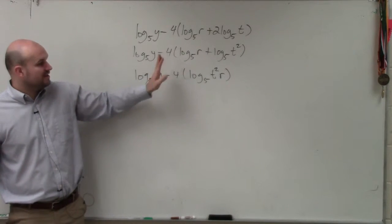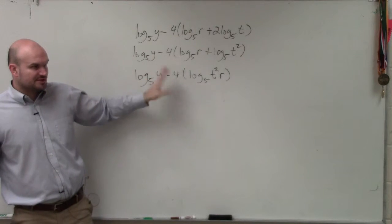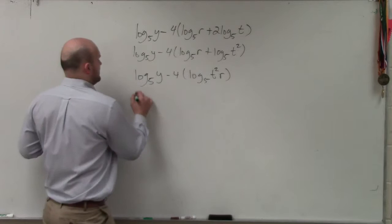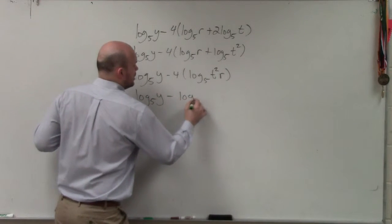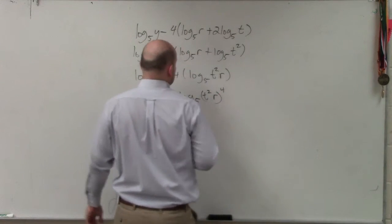Now I see there's a 4 in front of here, so I'm going to bring that 4 up top. You don't need to bring the negative with it. You can just treat that as a positive and still treat this as the subtraction of two logarithms. I'll rewrite this as log base 5 of y minus log base 5 of t squared r raised to the fourth power.